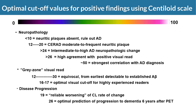Studies comparing antemortem amyloid PET with postmortem neuropathology suggest a centiloid scale of 10 or less does not show senile plaque, ruling out Alzheimer's disease. A centiloid between 12 and 20 shows medium to high frequency of senile plaque in CERAD classification, while 24 or higher shows medium to high Alzheimer's disease pathology. A score of 26 or higher is in good agreement with visual assessment, and 50 or higher correlates most strongly with Alzheimer's disease diagnosis. The grey zone for visual assessment is between 12 and 30. A skilled reader can determine a positive result even at 16–17; 19 is the cut-off for reliable worsening rate of change, and 26 is the optimal predictor of progression to dementia after 6 years.